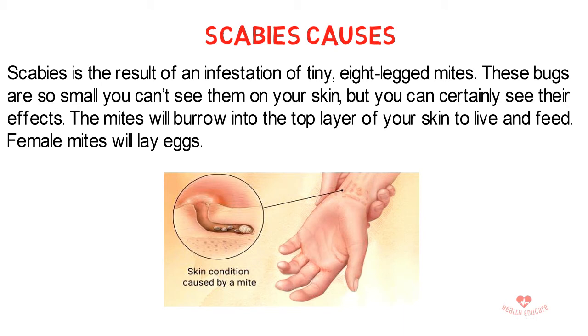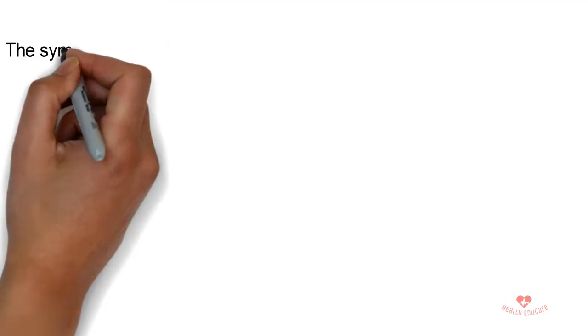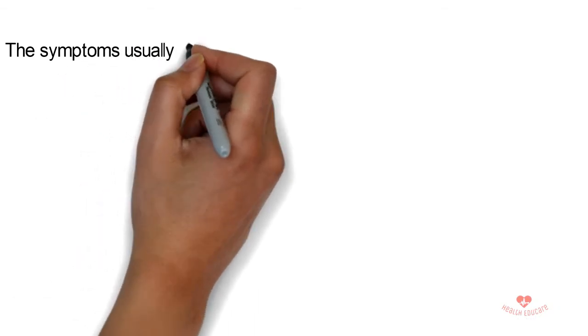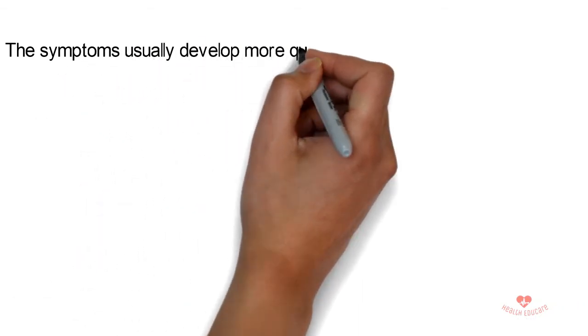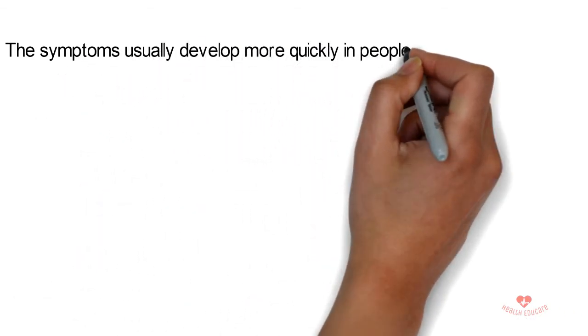After the initial exposure to scabies, it can take up to six weeks for symptoms to appear. The symptoms usually develop more quickly in people who've had scabies before.